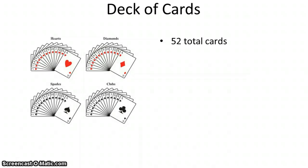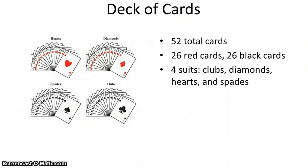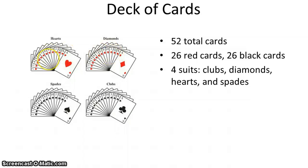A standard deck of 52 playing cards has 52 total cards. 26 are red and 26 are black, so half of the cards are red, half of them are black. You can also see from the picture here that you can group the cards into four equal groups, or what we call suits. We have the clubs, we have the diamonds, we have the hearts, and we have the spades. The 26 red cards are the diamonds and hearts, and the 26 black cards are the clubs and the spades.